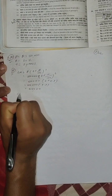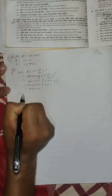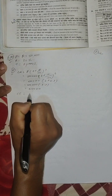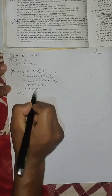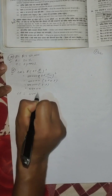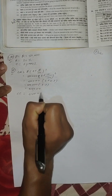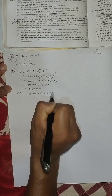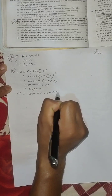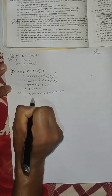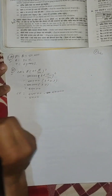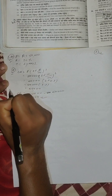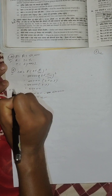So let me give you CI. CI is equal to — what we have to do? Amount minus principal. 50,000 minus 50,000. So let me give you 50,000.